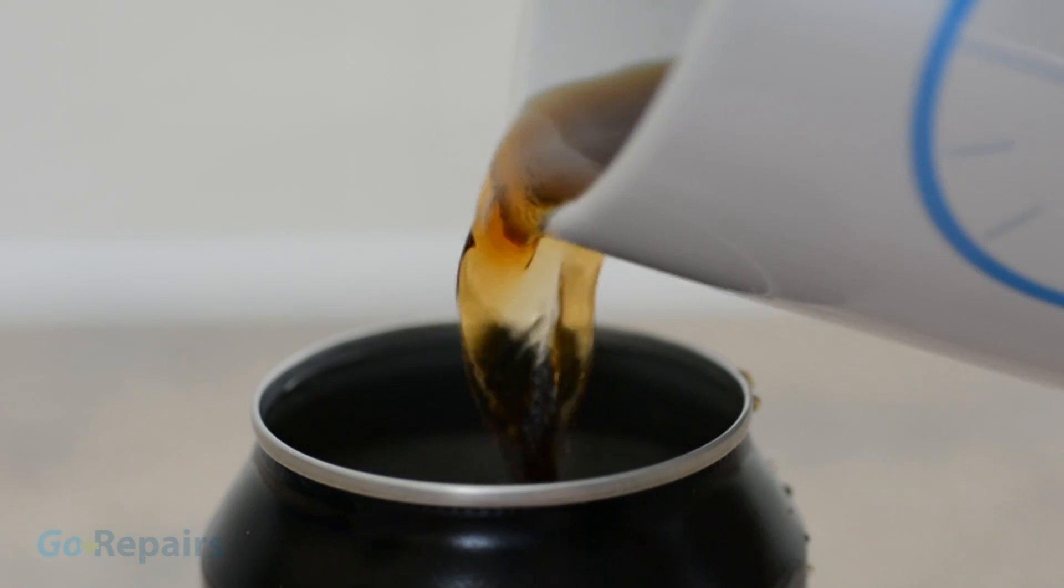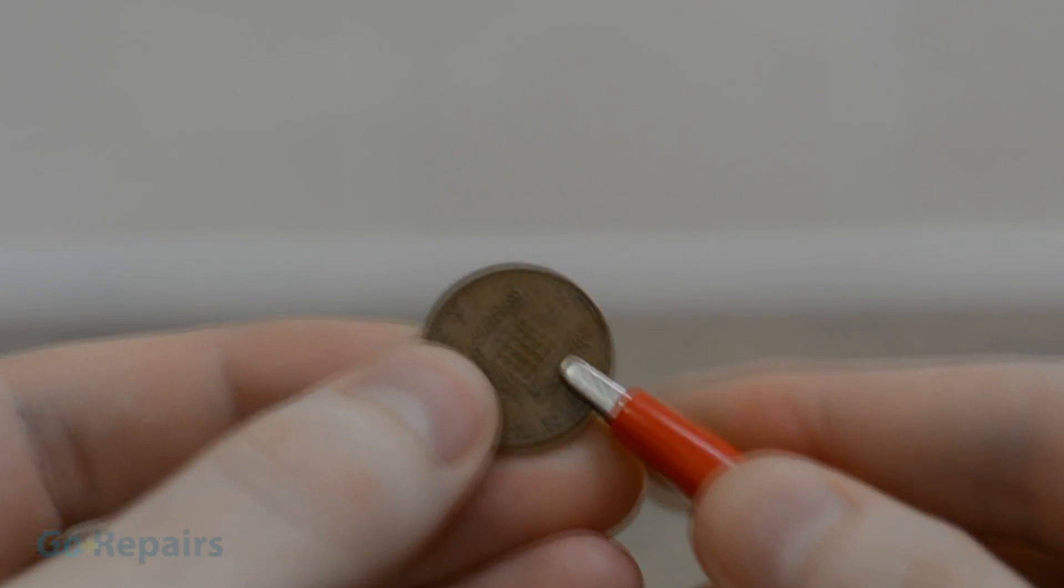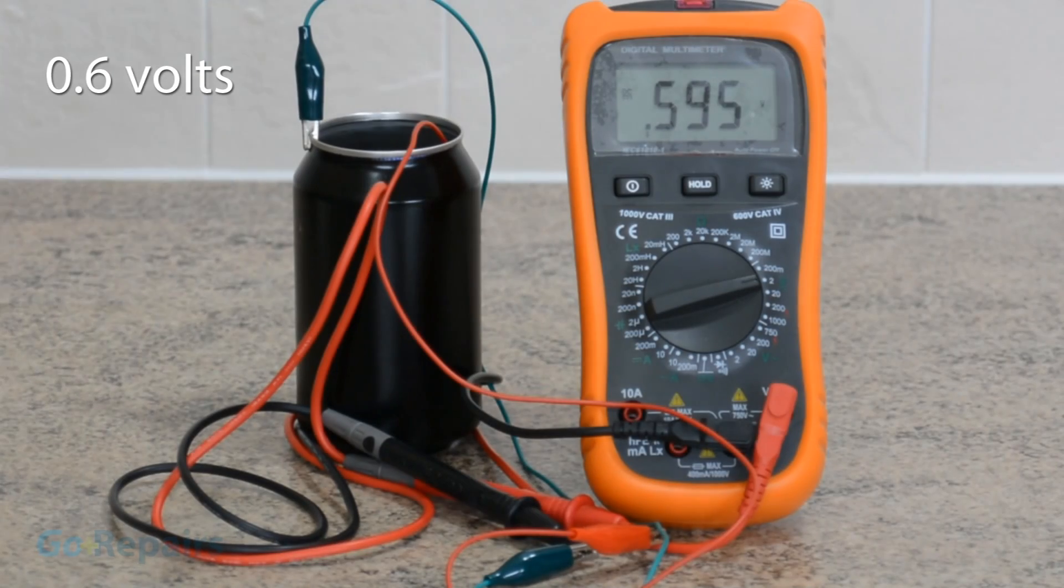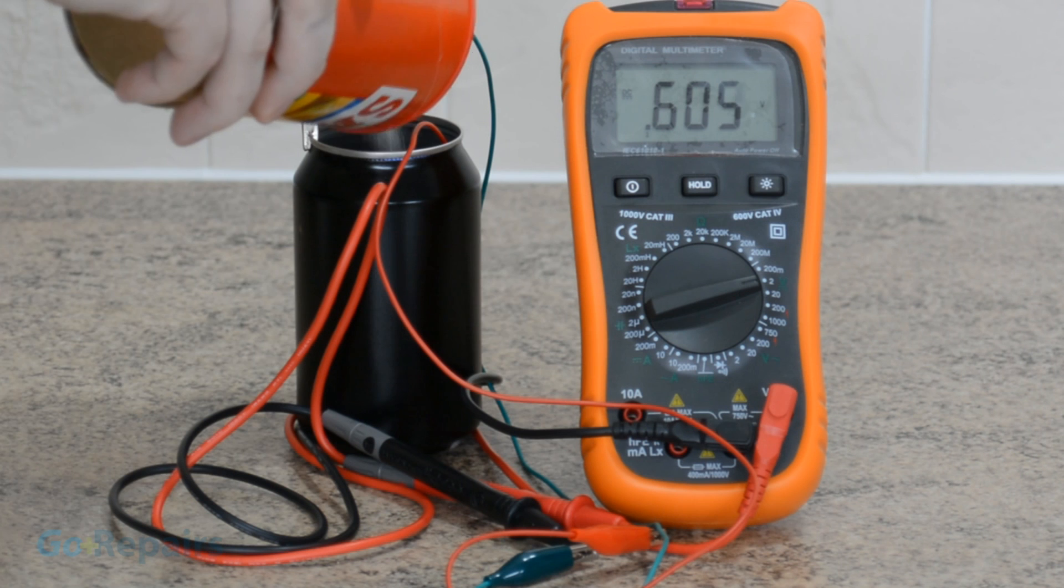Pour the contents back in from the cup, attach a crocodile clip to your penny and dip it into the drink. Use another crocodile clip to attach to the can itself. If we take a reading, we can see we're producing some voltage.